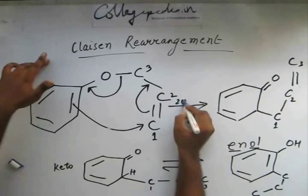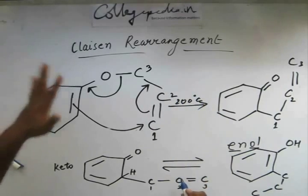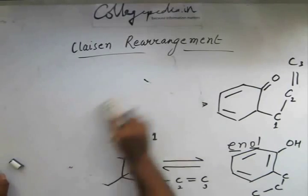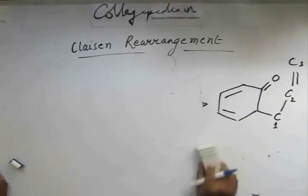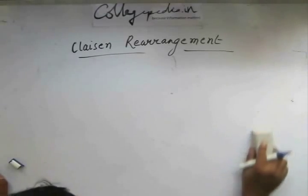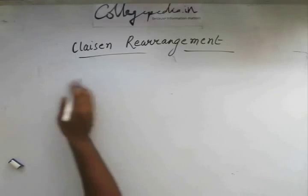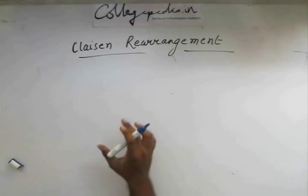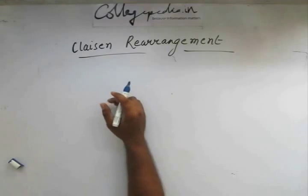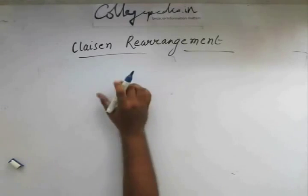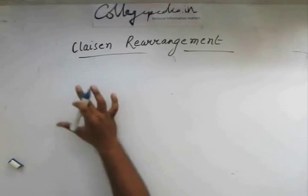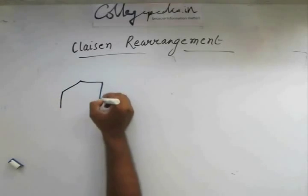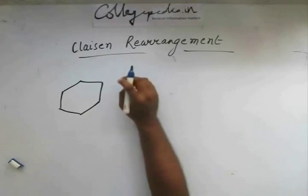I hope you understand Claisen rearrangement. I always suggest keeping in mind the basic rearrangement reaction mechanism, because it is not always the case that the allyl form will be very simple. You have to keep in mind that the carbon atom adjacent to the ether group will attack the carbon that is in the allylic position.